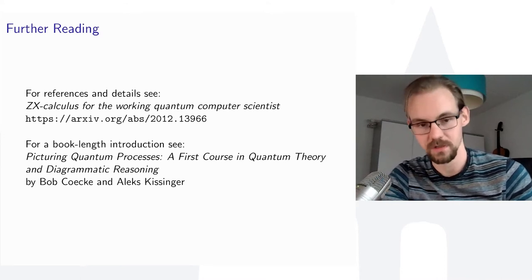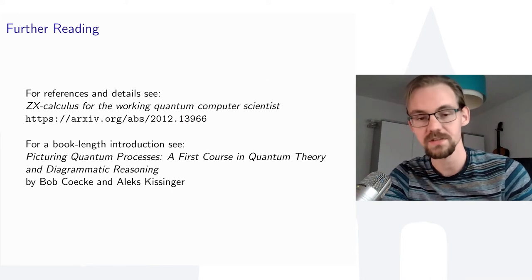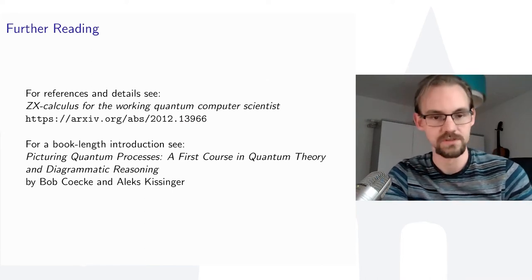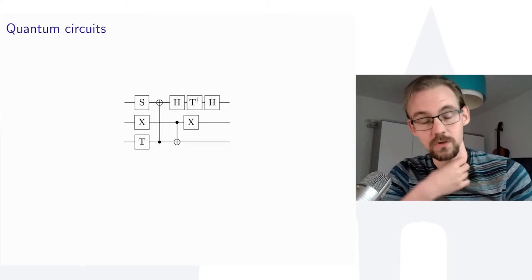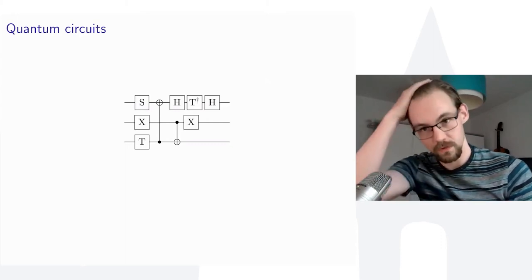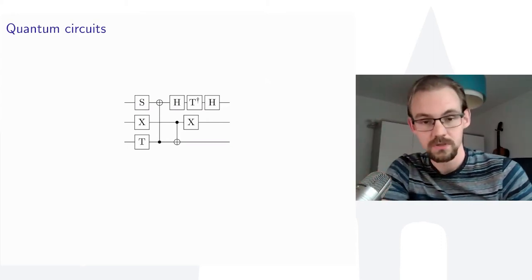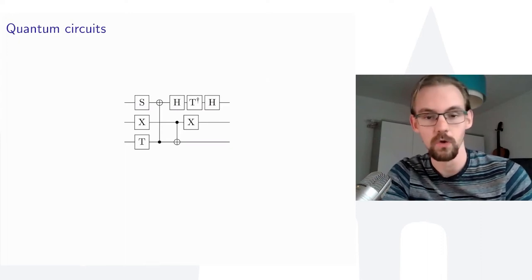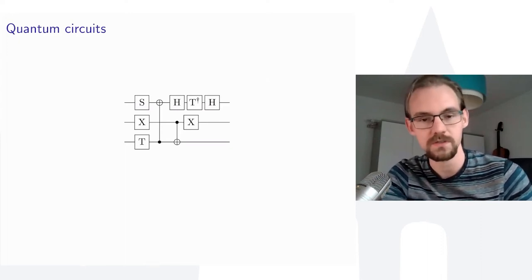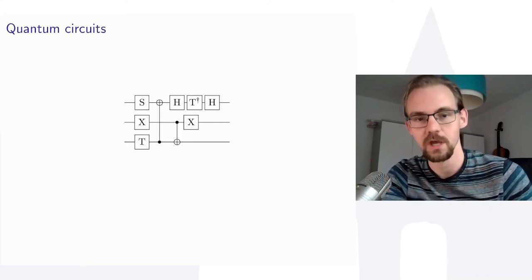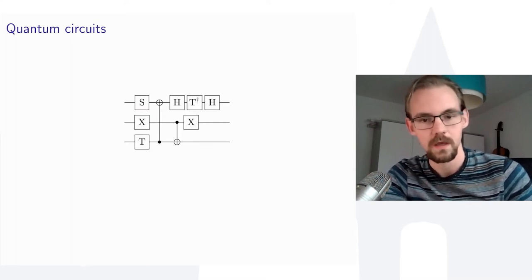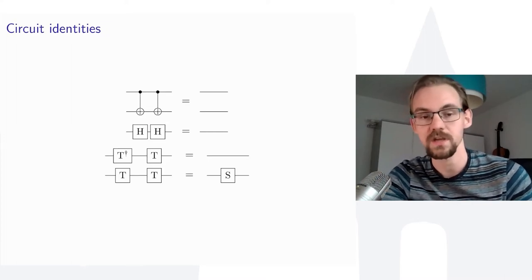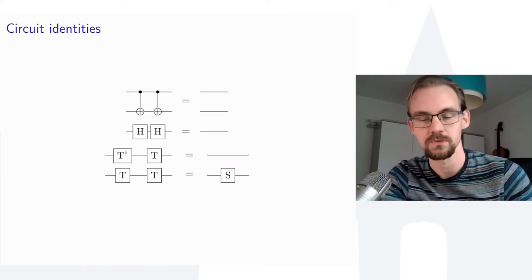If you want an even longer introduction, I highly recommend the book by Bob and Alex on picturing quantum processes, which also covers ZX. To understand what ZX is, we first have to go over quantum circuits. In a quantum circuit, wires go from left to right, each representing a qubit, gates act on the qubits, and time flows left to right. Multiple circuits can represent the same unitary — for instance, two CNOTs or two Hadamards can cancel.